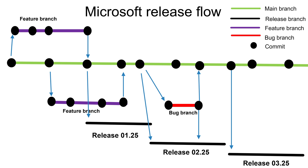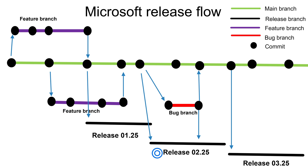Once the required features have been added, they will create a new release branch. This release branch will never get merged back to the main branch — by this way you maintain a version of it. Just like iOS 14, iOS 15 on iPhone, you will have versioning. In the first release you have only one feature, and if you are in the middle of creating a second feature, that second feature will not be available in the first release.